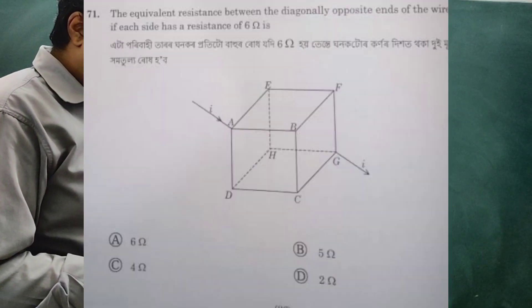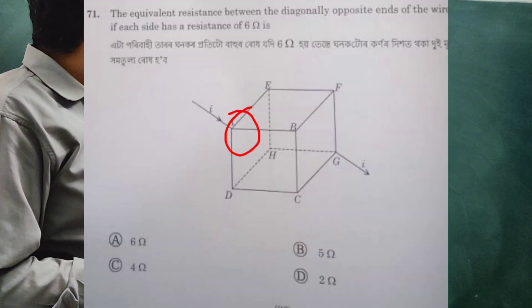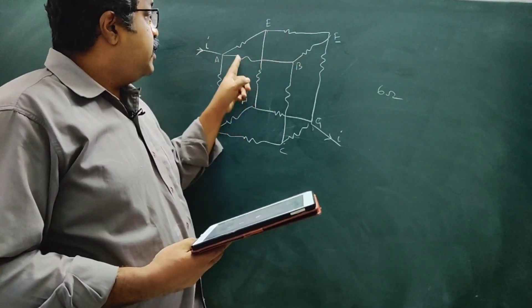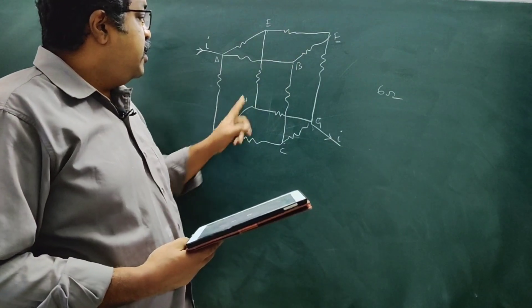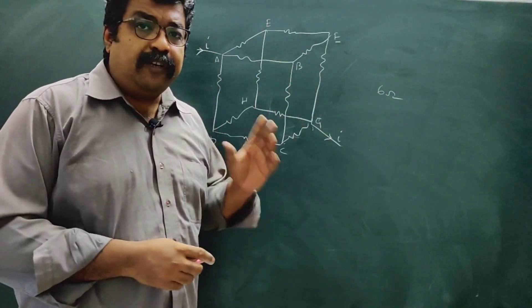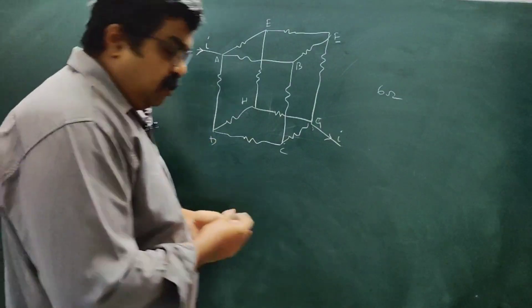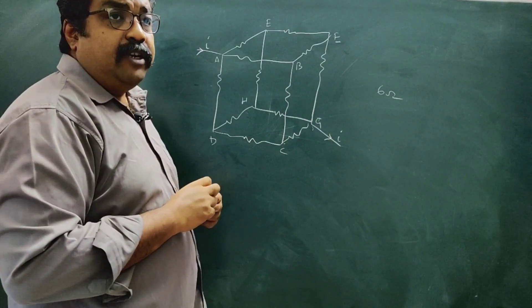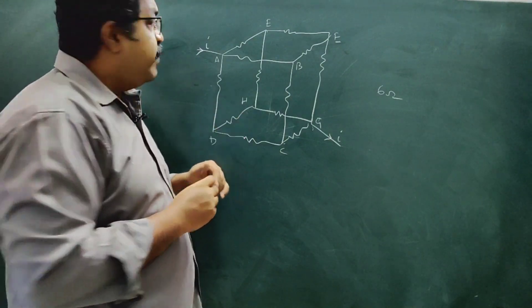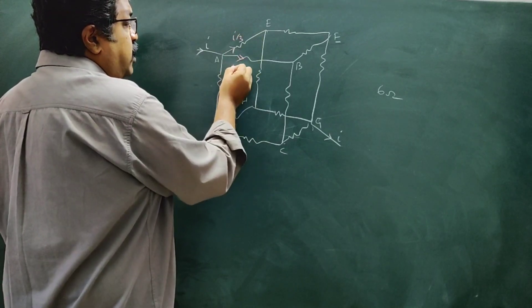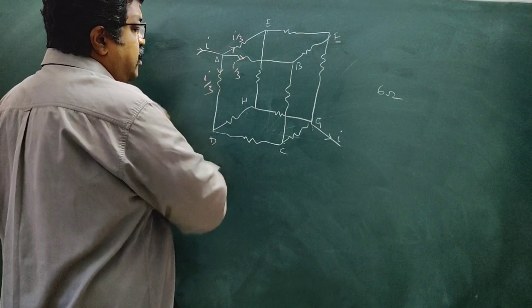The next question is about equivalent resistance between two diagonally opposite points of a network. Each identical resistance is 6 ohm. This is similar to the NCERT example. The current distribution shows the current is I/3.